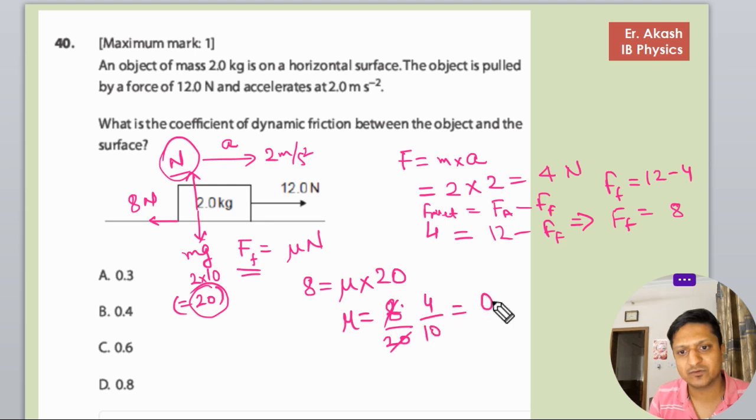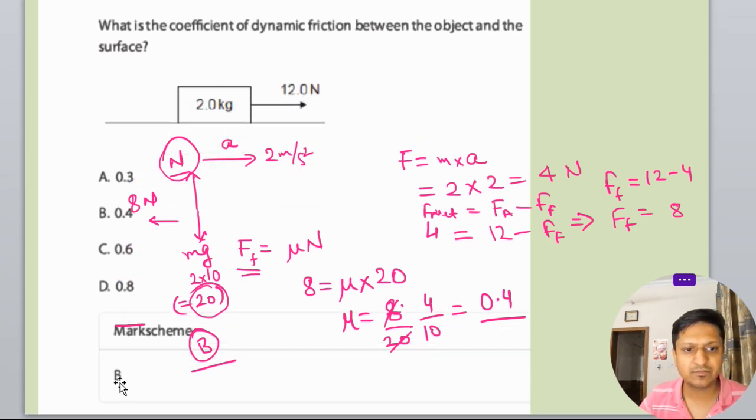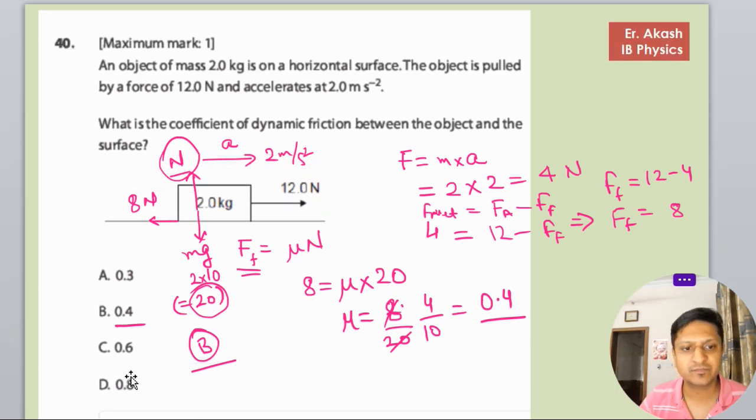by 10 equals 0.4. So 0.4 is the option. The coefficient of friction is 0.4. Now we will check the answer scheme. The answer scheme says B is the right answer.